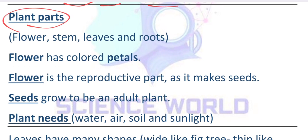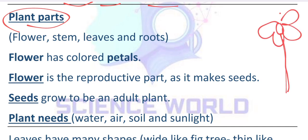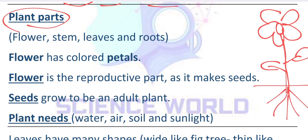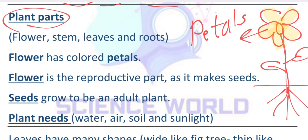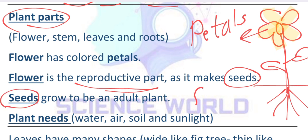Lesson number two: plant parts. Let's draw the plant together. We will draw the flower, the stem, leaves, and under the ground we will draw roots. The flower has colored parts — like these yellow colored parts, we call them petals. This flower is the reproductive part. It will give a seed, and this seed will grow to be a new plant. Seeds, like a bean, will grow to be an adult plant.